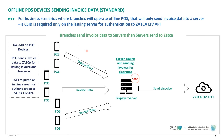If the taxpayer has a centralized server that issues and sends the invoices, while the points of sale neither generate nor send directly to ZATCA, then the points of sale do not need a CSID. Only the centralized server requires a CSID, since it is the one issuing and sending the invoices to ZATCA's invoicing platform.